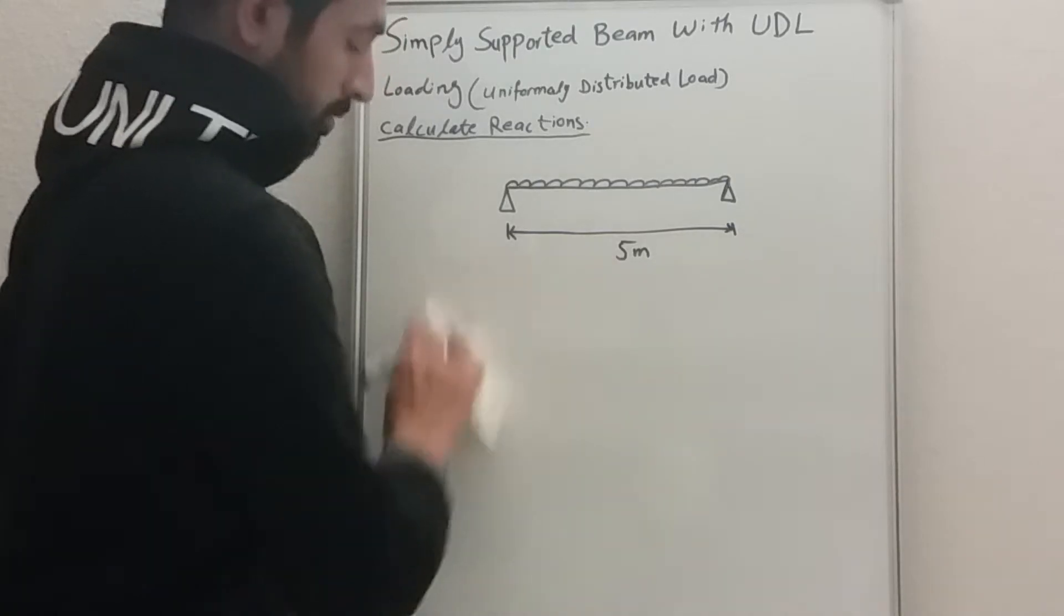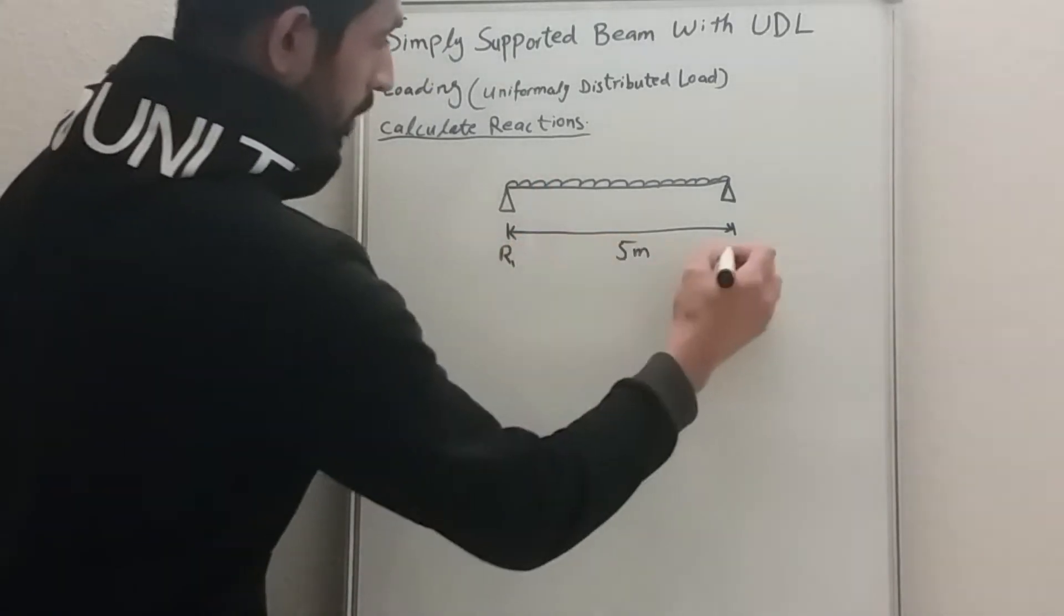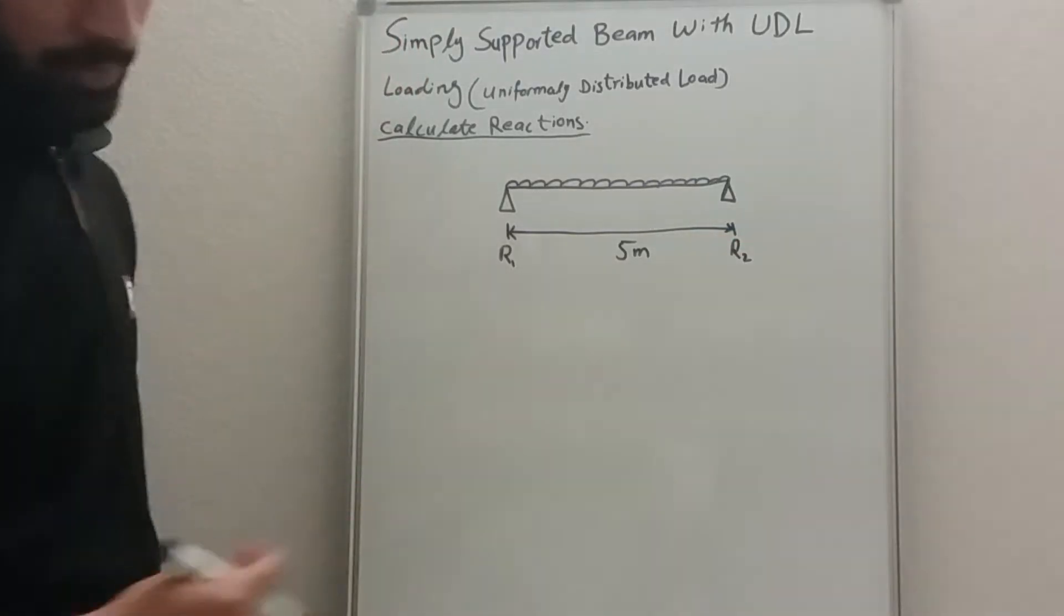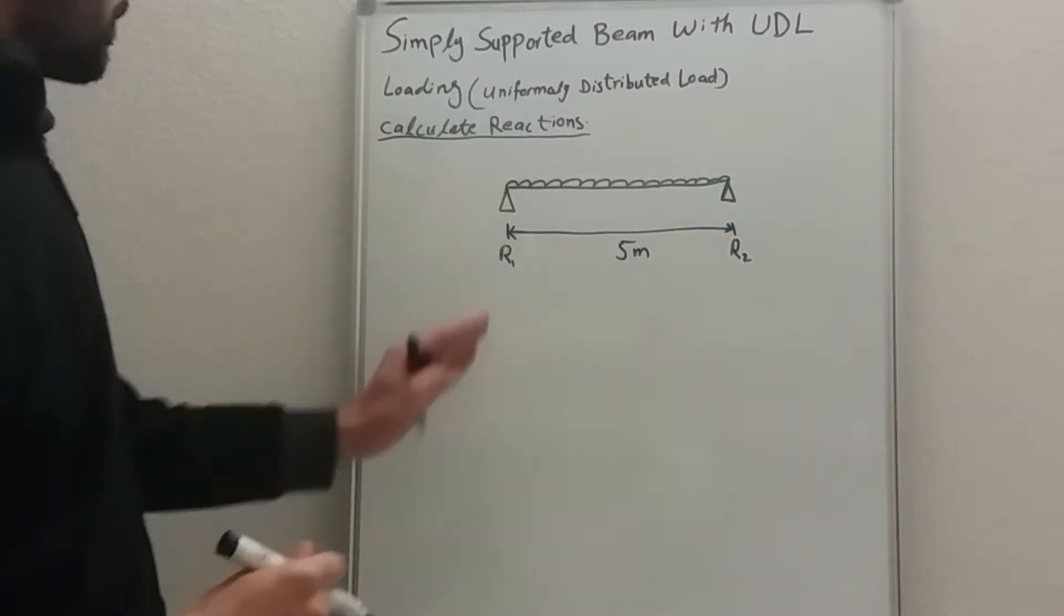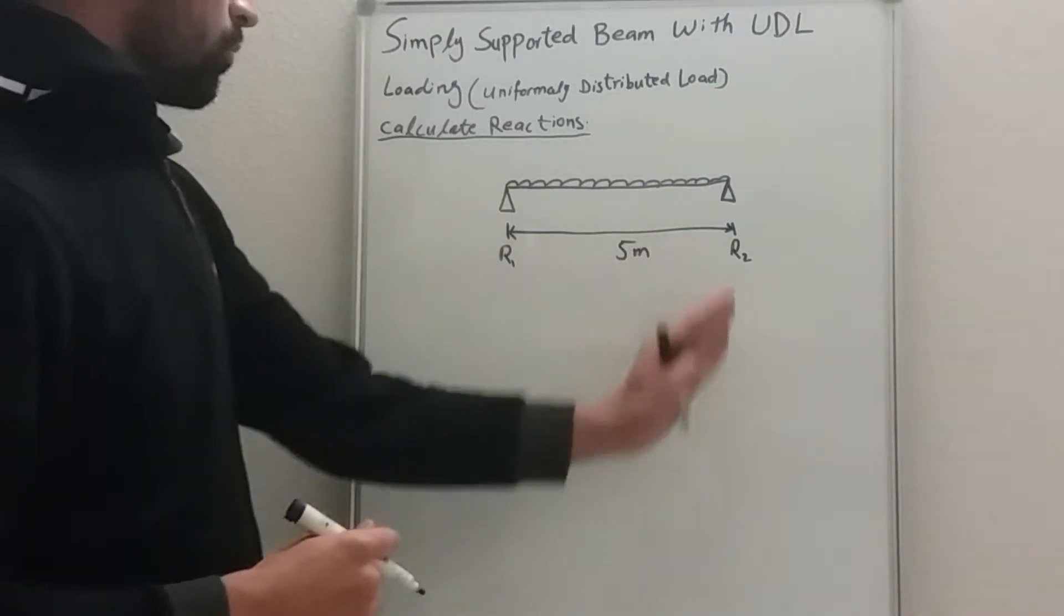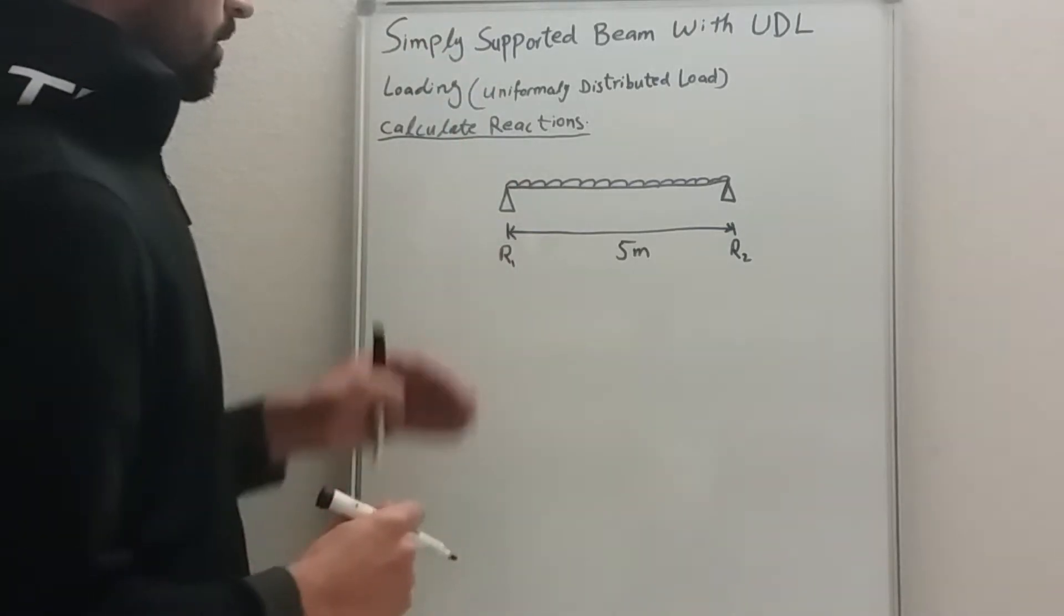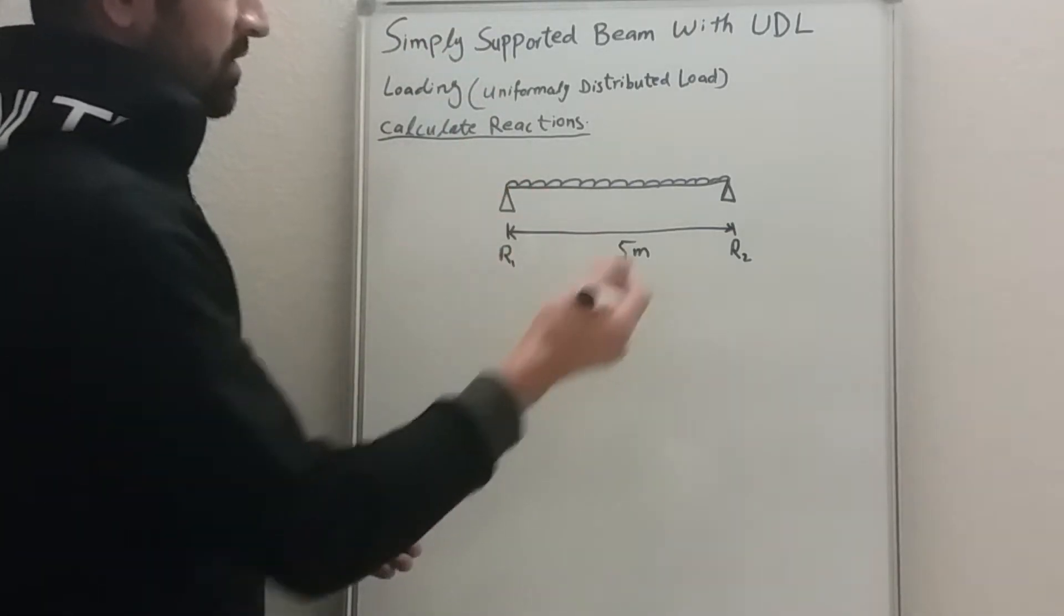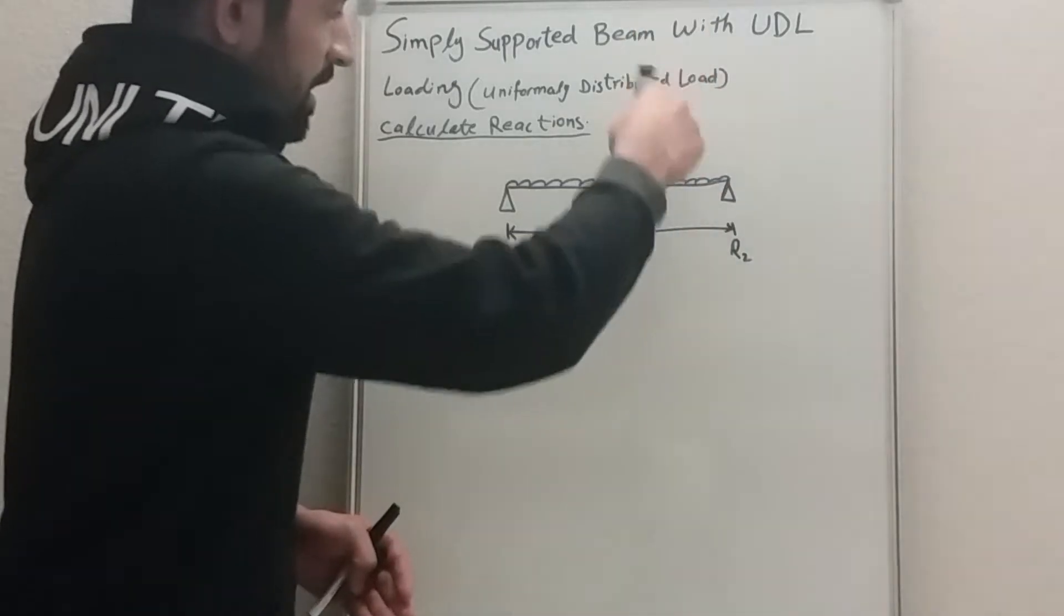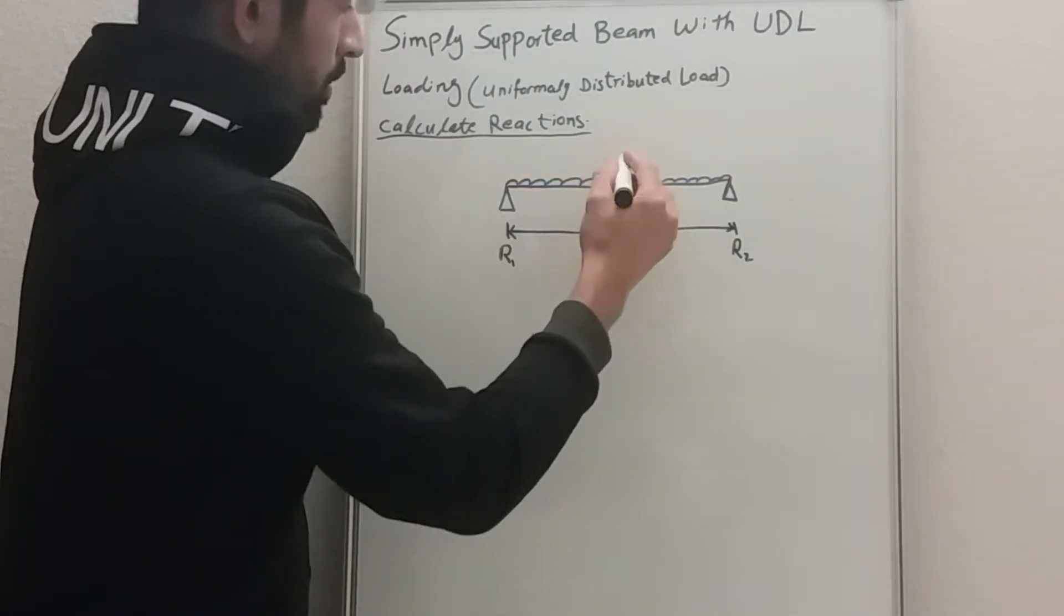So this is our beam. This is R1 and R2, as I have explained in my previous video. R1 is a reaction which is going upwards, both sides are going upwards, and the load is going downward. So this is action versus reaction. This is reaction and action is coming down.